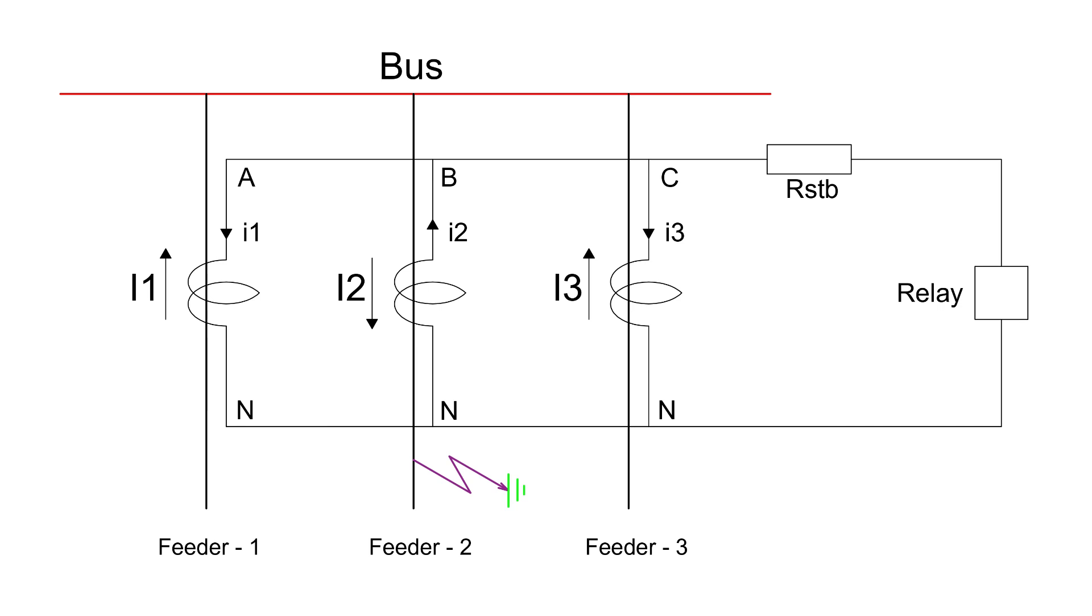The main cause of current flow through the relay coil in high impedance differential protection is the voltage across the terminals of the CT. Let's consider the worst case scenario where a CT gets completely saturated.